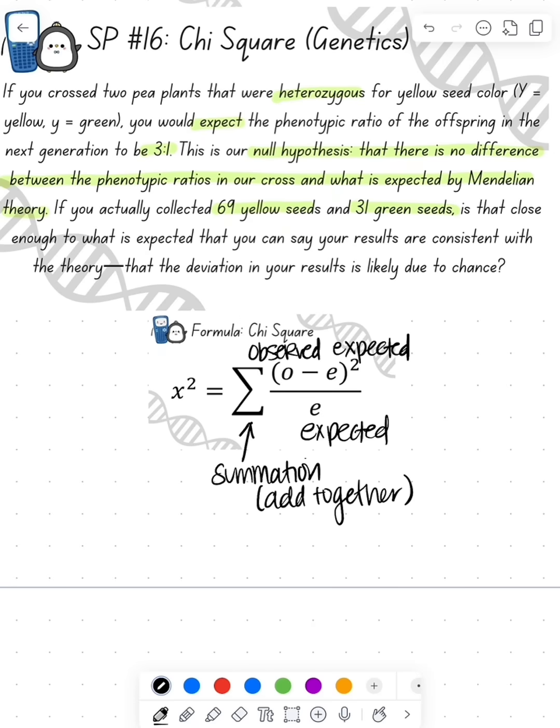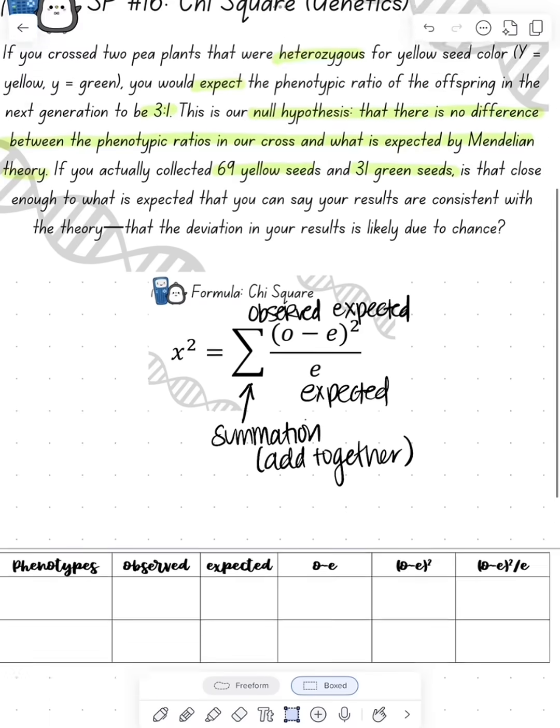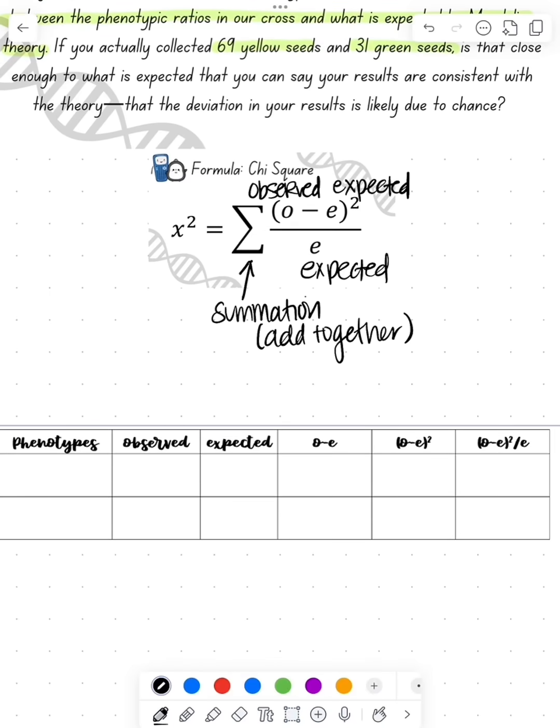I always use this chart to help with the calculation. We fill in the chart with our phenotypes: yellow and green. Then we go back to the question to see what we observed. We observed 69 yellow and 31 green, so we fill that in.